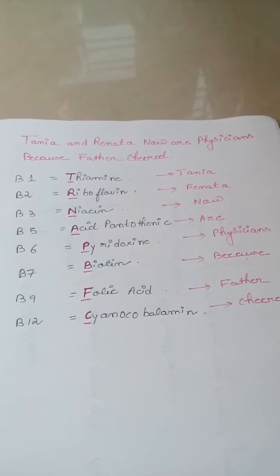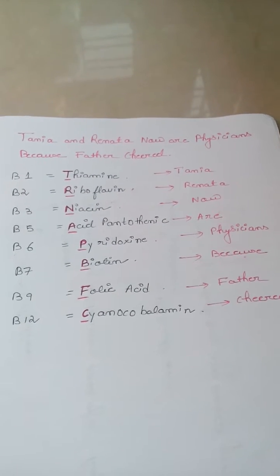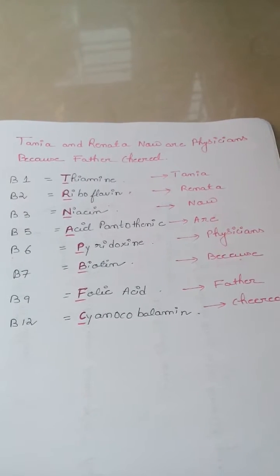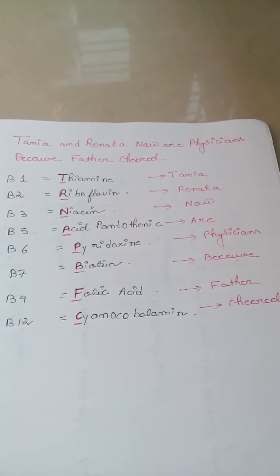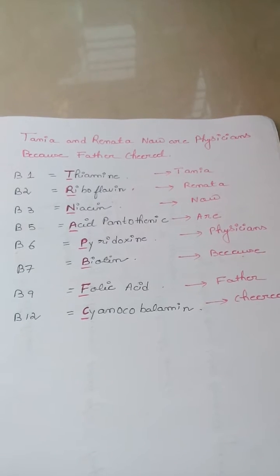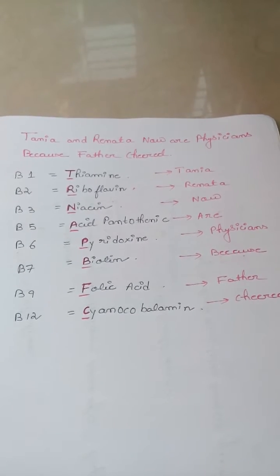Acid pantothenic, B6 pyridoxin, B7 biotin, B9 folic acid, B12 cyanocobalamin. So just relate the names of vitamin B with the mnemonic which I am providing you.